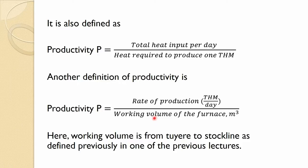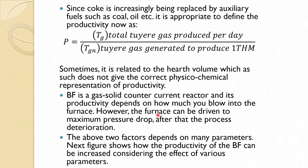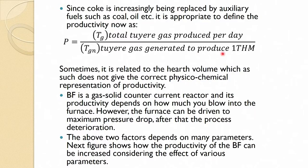Because we use quite a bit of gas and PCI fuel, there is another way of defining productivity that accounts for auxiliary fuels such as coal and oil. Since coke is increasingly being replaced by auxiliary fuels — coal, oil, even some natural gas — it is appropriate to define productivity as total tuyere gas produced per day divided by tuyere gas generated to produce one ton of hot metal.